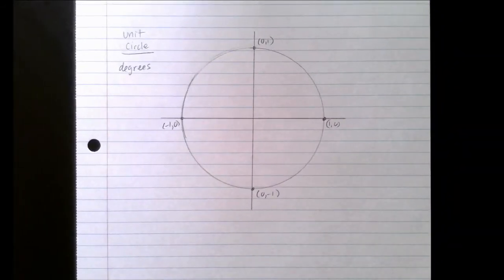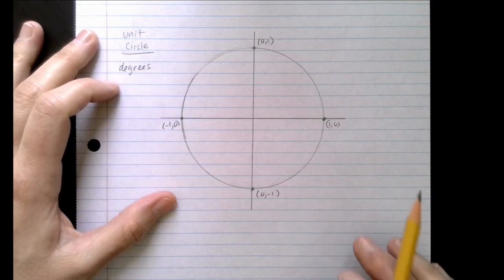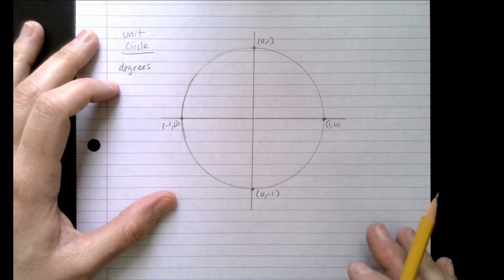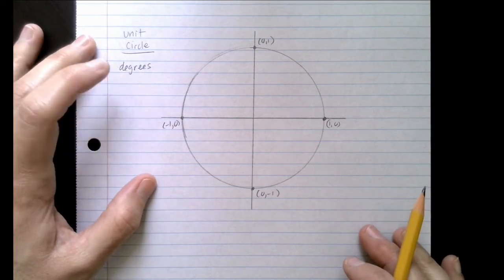Now that we've been introduced to this idea of radian measures and degrees and unit circles, I want to show you how these come together as our unit circle. Now the unit circle can have many different elements on it. I want to show you one of those elements, and it is the degrees.